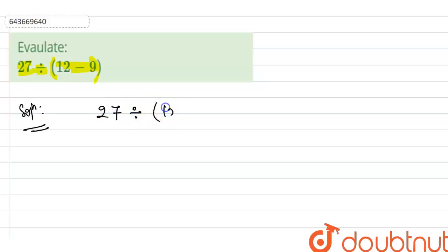27 divided by (12 minus 9). Okay, so let's understand this question, guys.